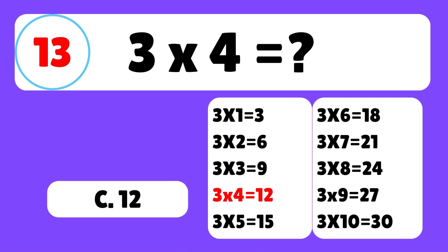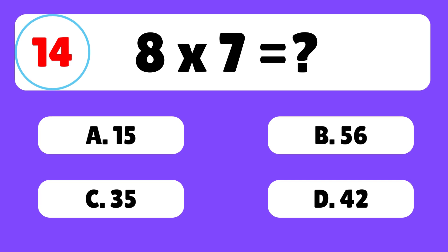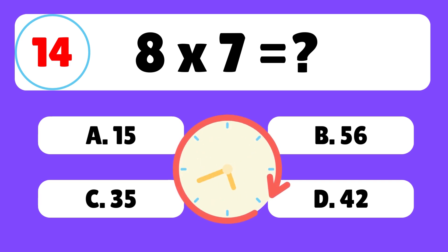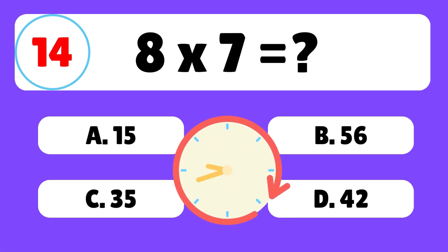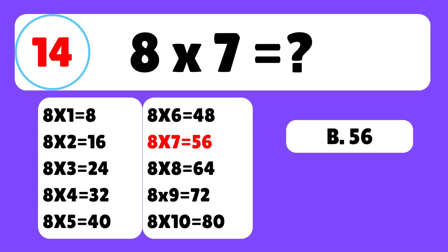Question 14. What is 8 times 7? The answer is B. 8 times 7 is equal to 56.